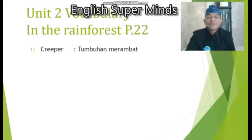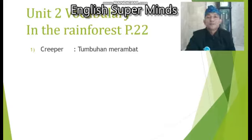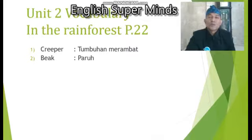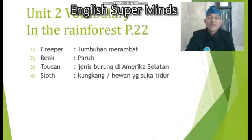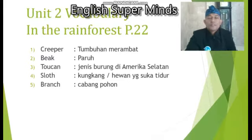The rainforest — ini hutan hujan. Apa saja yang ada di dalam hutan hujan? Creeper — tumbuhan merambat. Beak — paruh atau mulut burung. Toucan — jenis burung di Amerika Selatan. Sloth — kongkang, atau hewan yang suka tidur, animals like sleeping. Branch — cabang pohon, which has leaves, yang ada daun-daunnya.